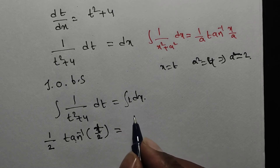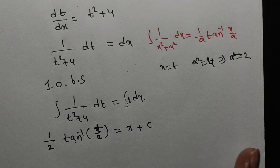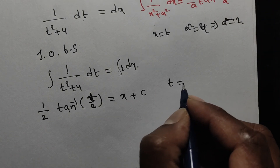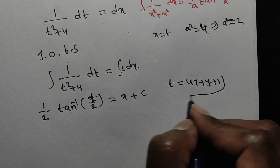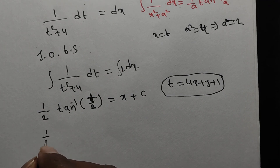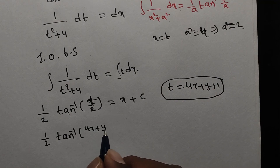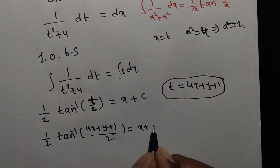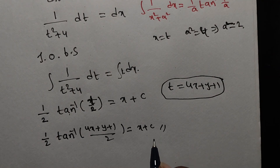Now replace t by (4x + y + 1) from equation number 2 to get the general solution. Therefore: (1/2) tan⁻¹((4x + y + 1) / 2) = x + c, where c is an arbitrary constant.